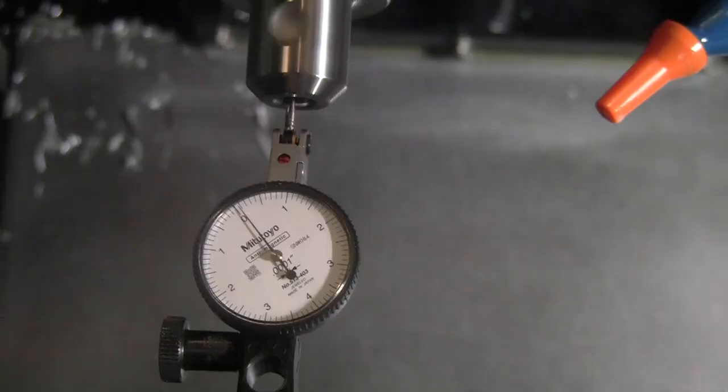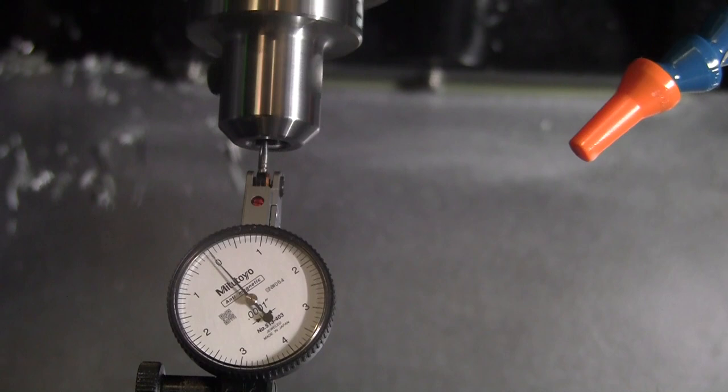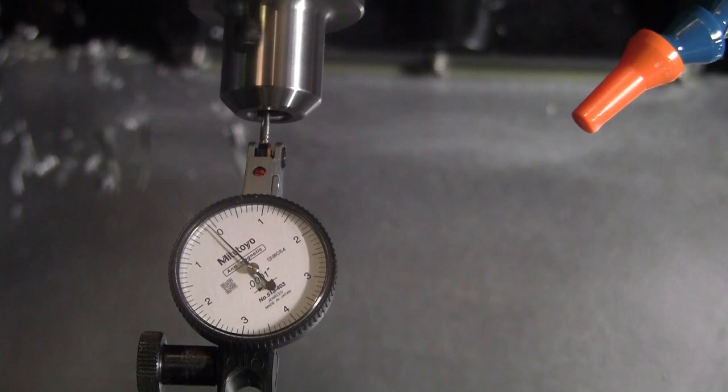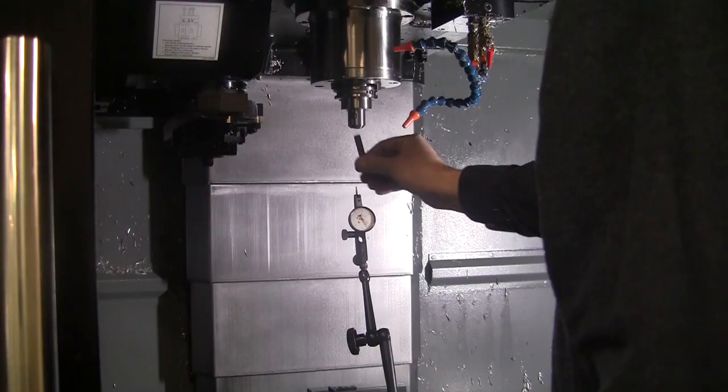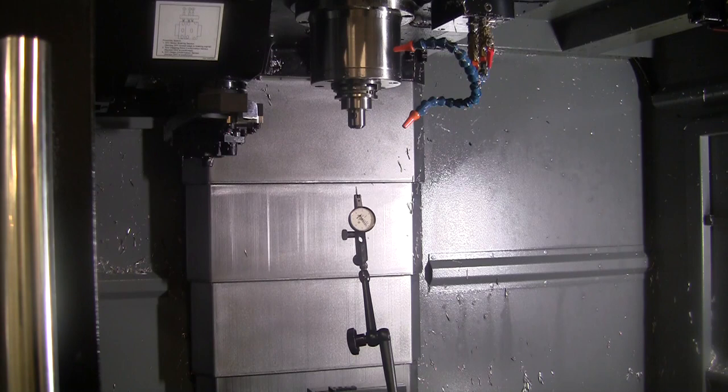It's probably within the limits of the actual indicator. Now here's a 3/8 inch end mill holder. This is a Pioneer holder. And you can see it's running out about 2 tenths. The video wasn't very good quality, but it was about 2 to 3 tenths.